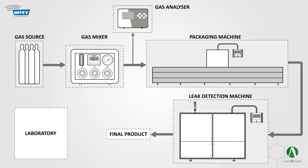This simple schematic gives an overview of the whole structure of a MAP system. As you can see, it is composed of different parts. To better understand this structure, let's focus on each part of this system one by one. At the very beginning, there are the gas sources.